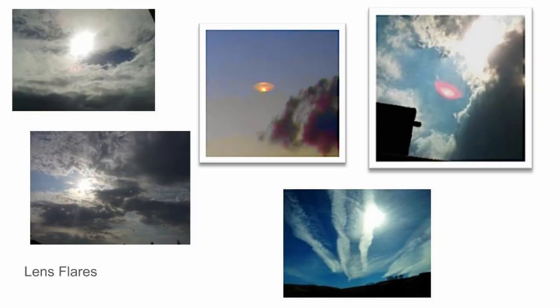Lens flares — we've gotten a lot of lens flare reports. Any time the witness says, 'I was taking a picture of some clouds, and when I got it home and put it on the computer, I saw this weird thing on the picture,' that's almost always nothing of interest. Lens flares are just reflections inside the lens, and you get different types depending on the kind of lens you have. One dead giveaway of lens flares is there's always a little bright light source in the frame — it could be the sun, the full moon, or a street lamp.